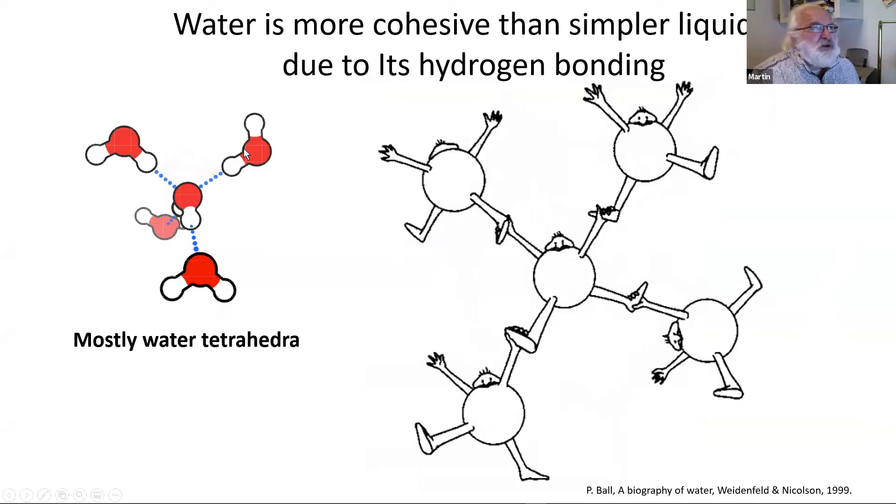Water is different from simpler molecules due to its hydrogen bonding. These are the links between molecules. On the overhead here you can see that these little men are meant to be the water molecules and they can hold on to each other by their hands or their feet. They have these linkages together which holds them all together, mainly in these sort of tetrahedra.